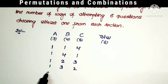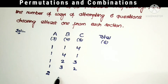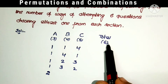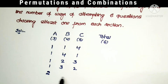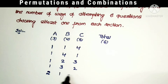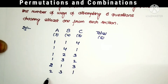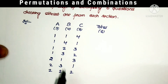If we select 2 questions from the first section, then we have to select 4 questions from the remaining 2 sections. The possibilities for choosing 4 questions from the 2 sections are: (1, 3), (3, 1), and (2, 2).